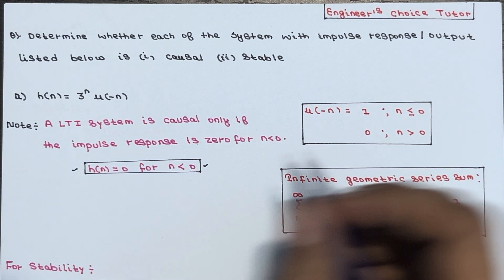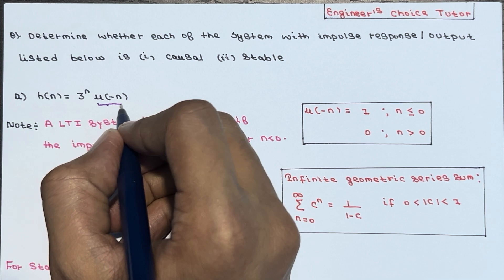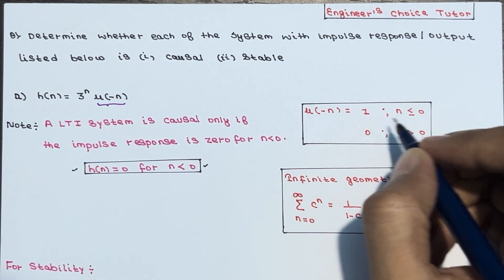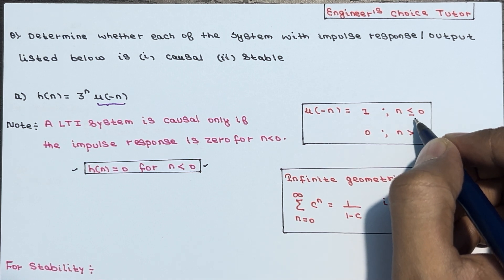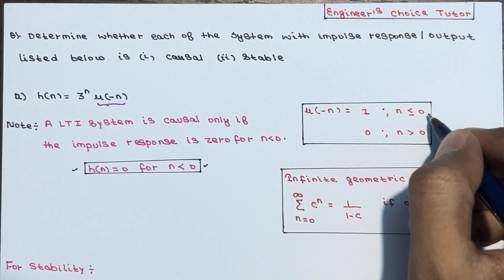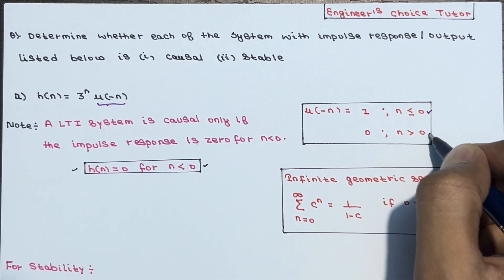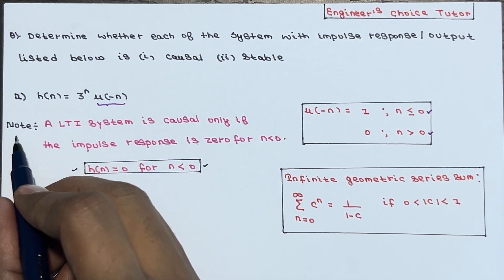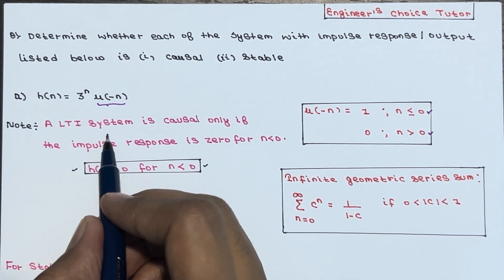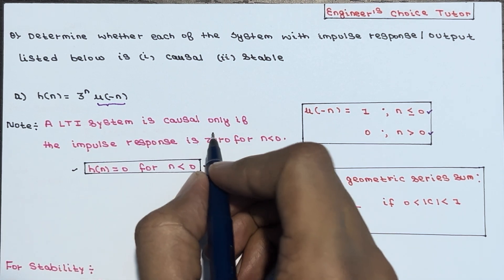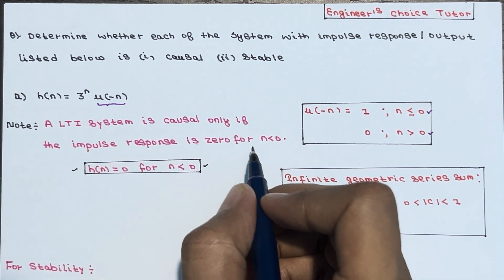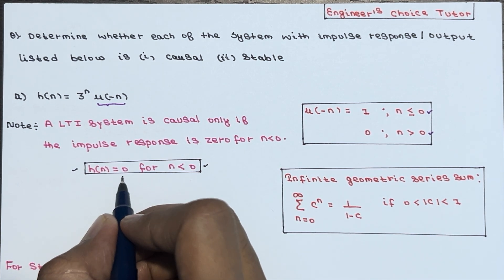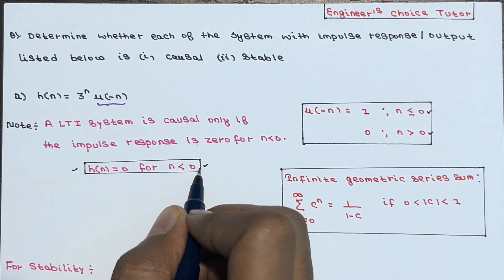Let's analyze u(-n) first. u(-n) is 1 when n is less than or equal to 0, and it is 0 when n is greater than 0. One key point we have already covered: an LTI system is causal only if the impulse response is 0 for n less than 0, meaning h(n) = 0 for n < 0.